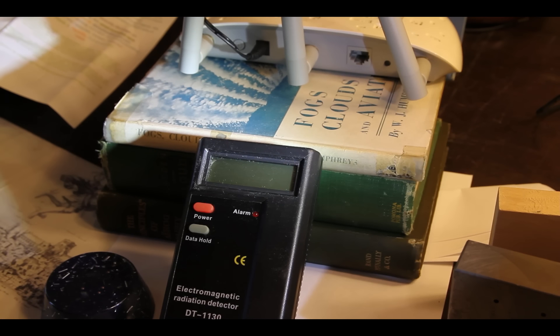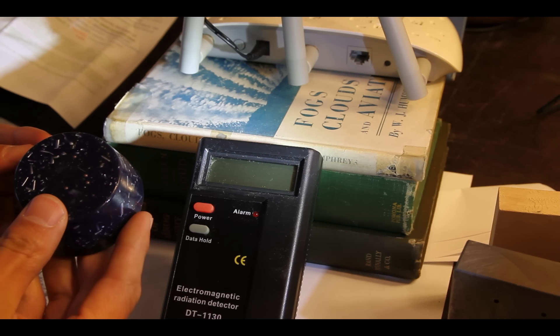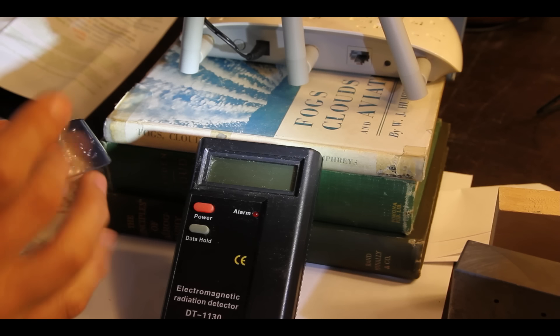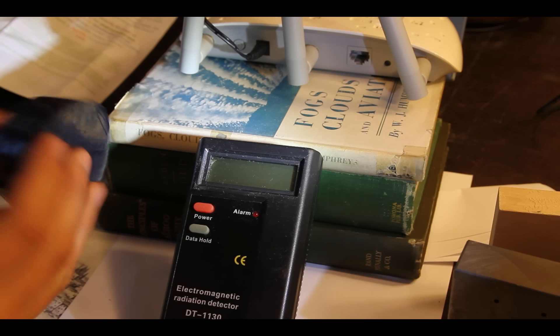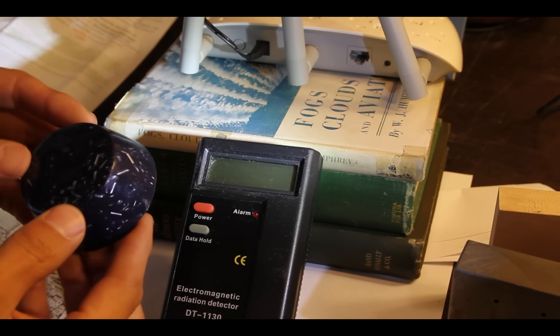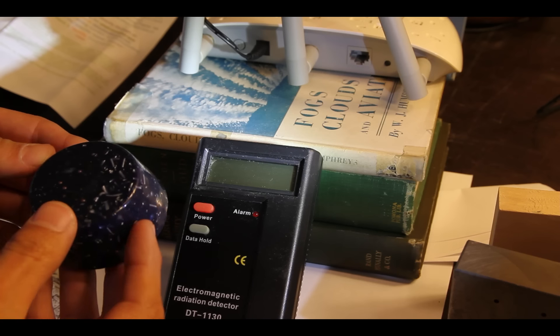Hi, my name is Mick West of metabunk.org and today we're going to have a look at orgonite. This is orgonite. Orgonite is a mixture of resin and some metal shavings and various other things, crushed crystals, bits of copper, things like that.